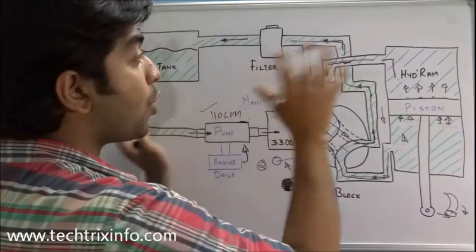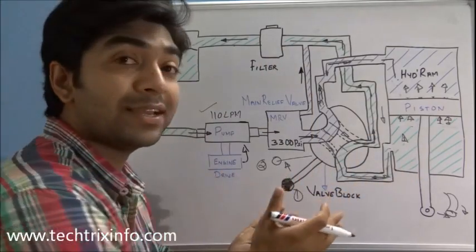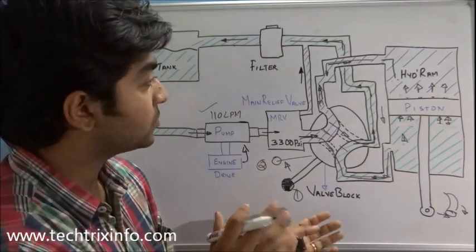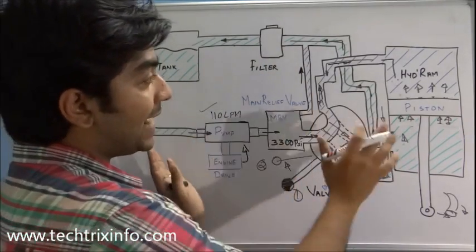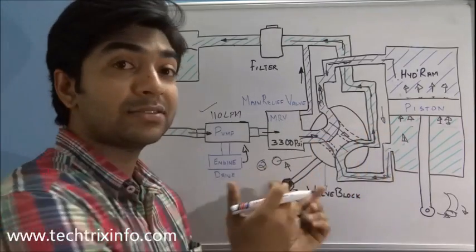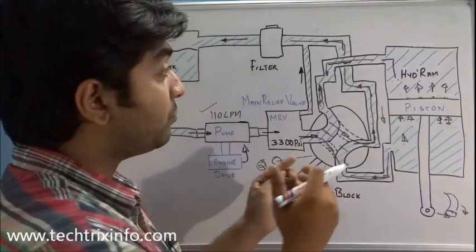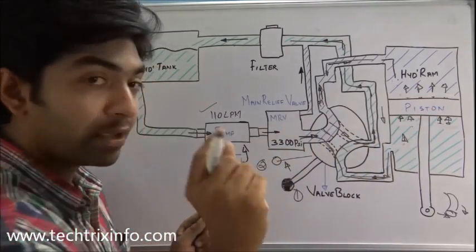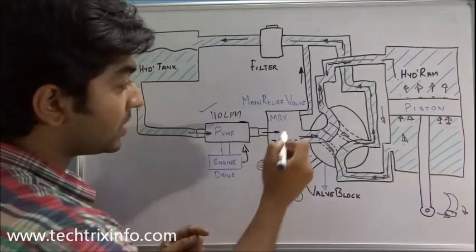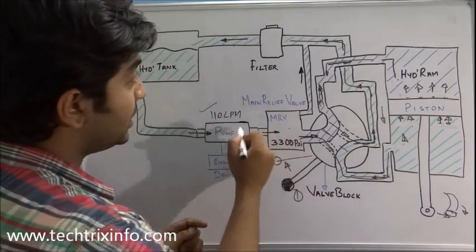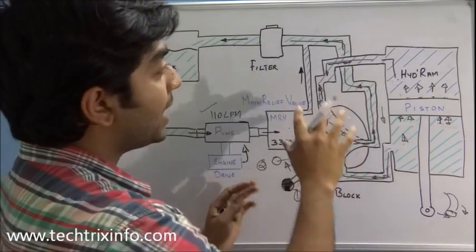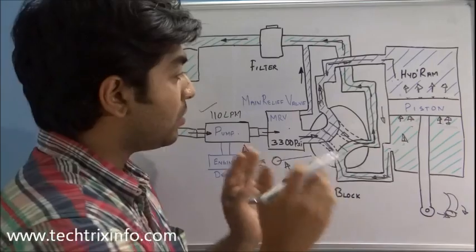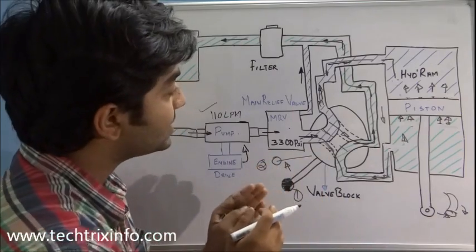That's how the whole hydraulic circuit of a backhoe loader simply works. I believe you now have an idea about the basic circuit. If you want to learn about each specific component, bring your mouse cursor over the relevant component, click on it, and you will get the video for that.